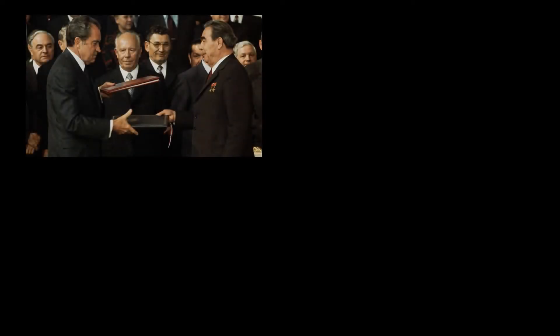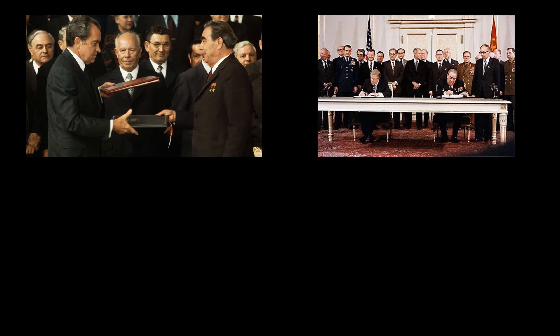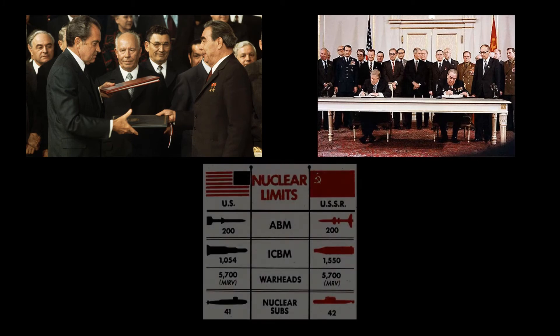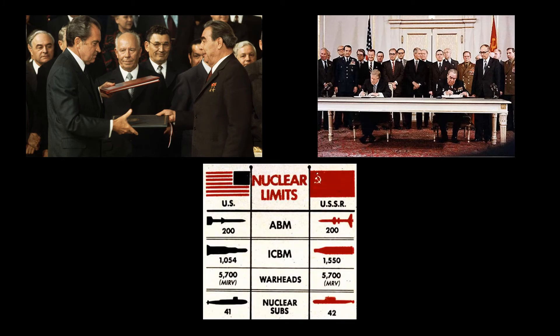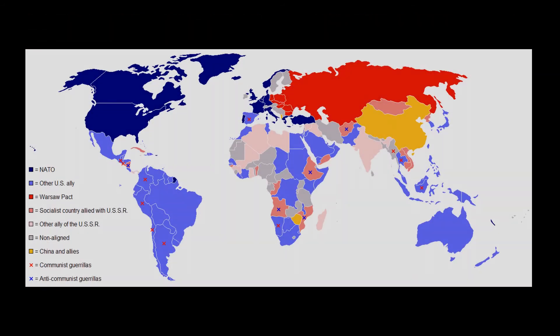The 1970s saw an easing of Cold War tensions, primarily through agreements in 1972 and 1979, in which the two superpowers set limits on their anti-ballistic missiles and on their strategic missiles capable of carrying nuclear weapons. That, however, was followed by a period of renewed Cold War tensions in the early 1980s, as the two superpowers continued their massive arms buildup and competed for influence in the Third World.